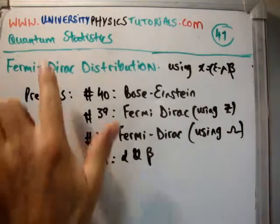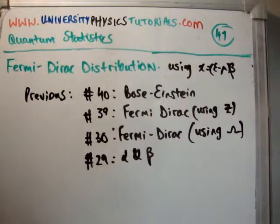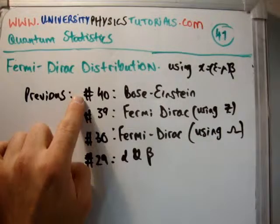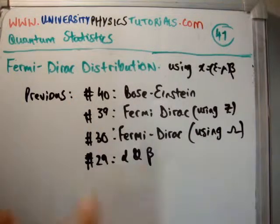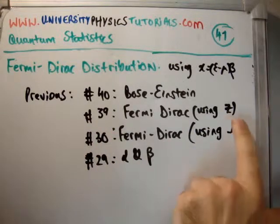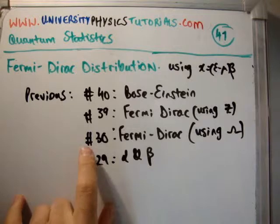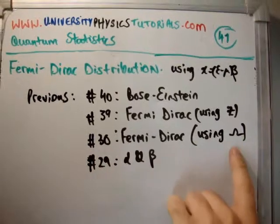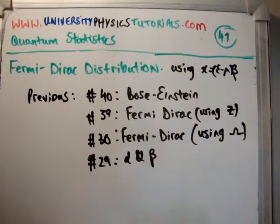My website is universityphysicstutorials.com where I've got all my videos archived and listed. The previous videos to this are number 40 where I did the Bose-Einstein distribution, number 39 where I calculated the Fermi-Dirac distribution using the grand partition function, number 30 where I calculated the Fermi-Dirac distribution using the multiplicity, and number 29 where I calculated alpha and beta.